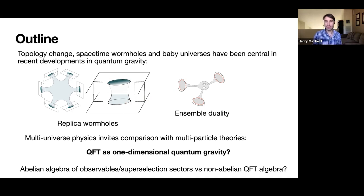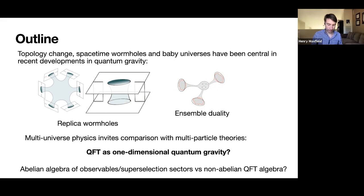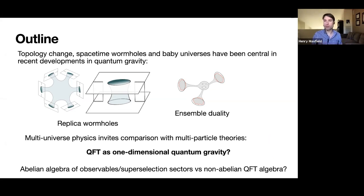One crucial element here is this ensemble duality, which involves just a classical probability distribution over different theories. That classical probability distribution comes from the fact that the algebra of asymptotic observables is abelian—different boundaries can be thought of as commuting operators. This is obviously not what we usually think about in CFT, where we have a non-abelian algebra of fields, which throws some doubt onto this abelian algebra picture.